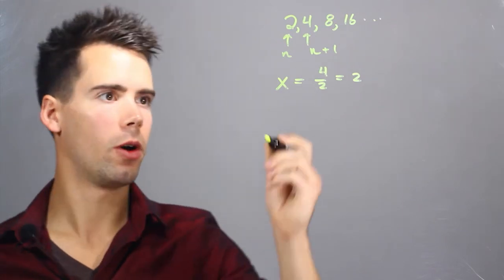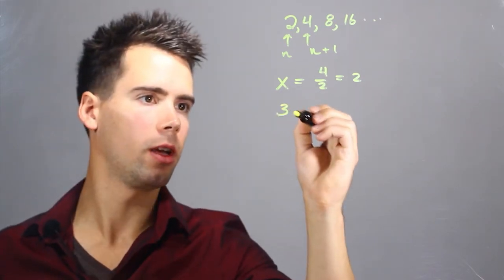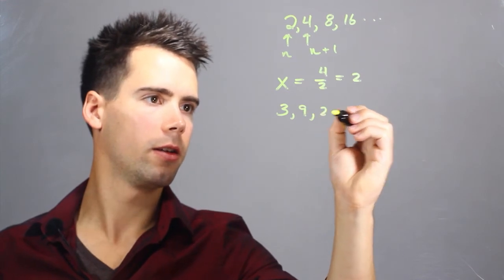Now the more difficult one, a little bit more difficult, is we could have 3, 9, 27.